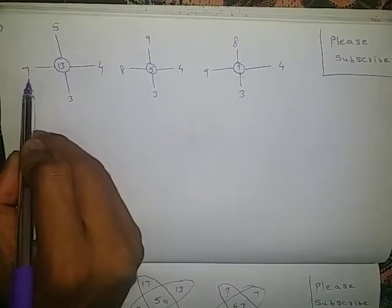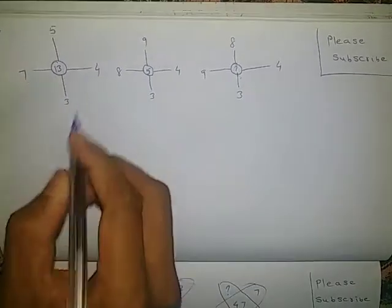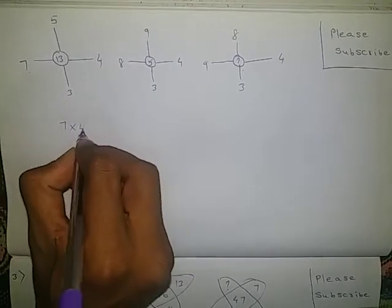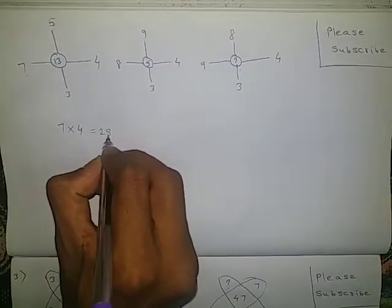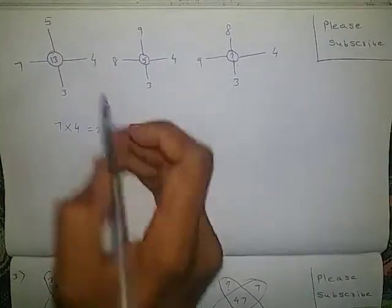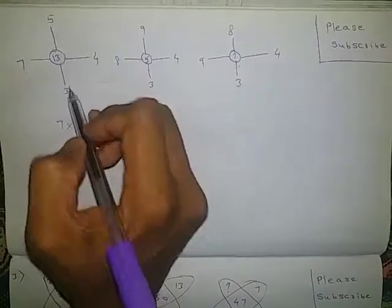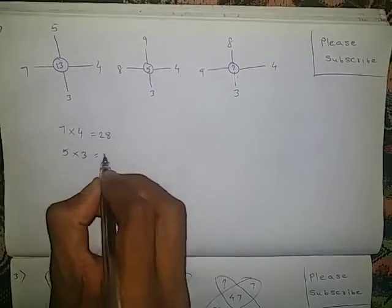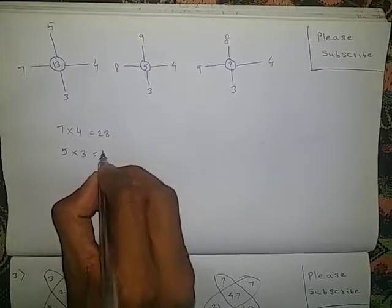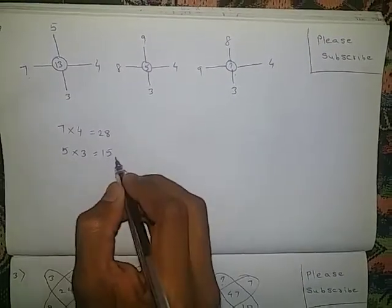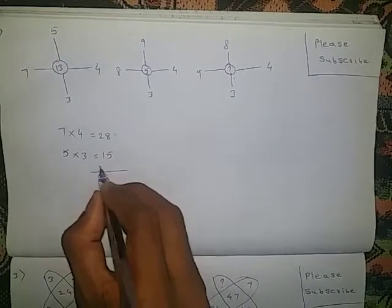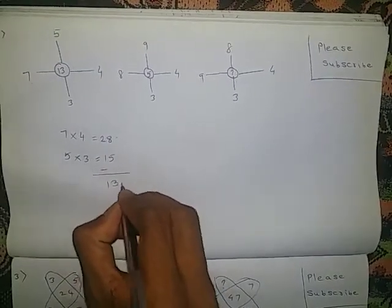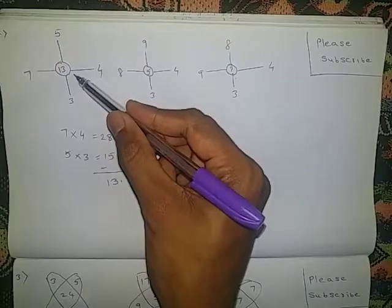Let us check once. 7 into 4 is 28. 5 into 3 is 15. If you do subtraction of these two, you will get the answer which is in the middle.